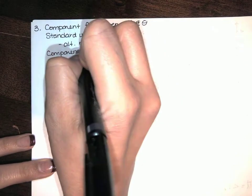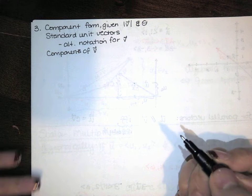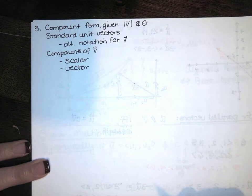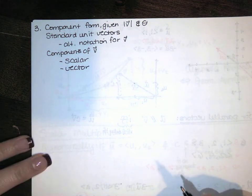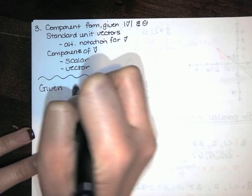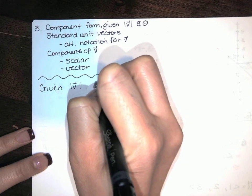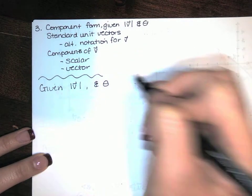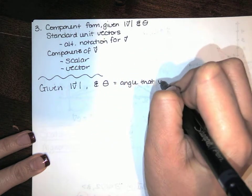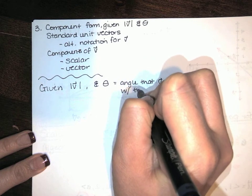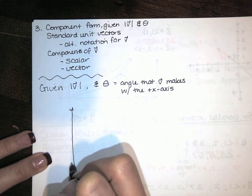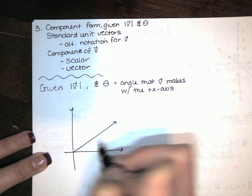And we're going to talk about the components of v. Now that can be a little ambiguous — sometimes we're talking about scalar components and sometimes we're talking about vector components, and I'll show you what I mean. So let's say you're given the length of v and the angle theta, where theta is the angle that v makes with the positive x-axis. It's that same angle from trig. So let's just make theta acute.